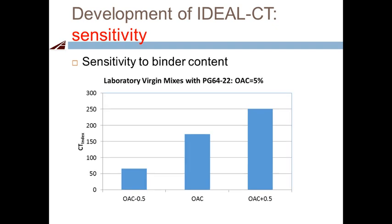This slide shows sensitivity to asphalt content. Starting from the optimum of 5%, we subtract 0.5% to get 4.5% and add 0.5% to get 5.5%. Increasing the asphalt content increases the cracking resistance, as clearly shown by the CT Index results.